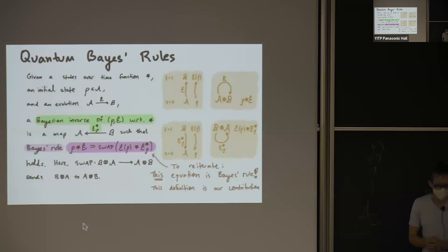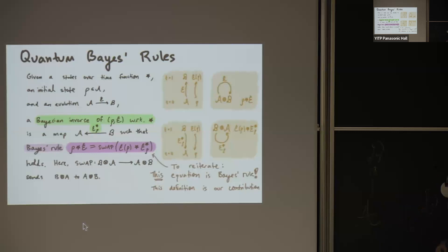And now let me motivate why, or at least justify, this definition. So really, this definition is the contribution of James Fullwood and I. So let's look at an example. Imagine you take a uniform distribution. Think the infinite temperature Gibbs state. And a bistochastic evolution, which takes that Gibbs state to the Gibbs state itself. Then this is exactly what that physical system is modeling. And it's described as a CPTP map. That's also unital.